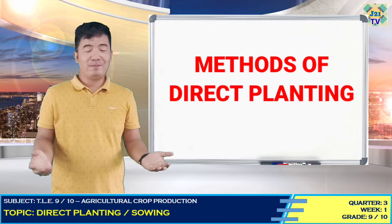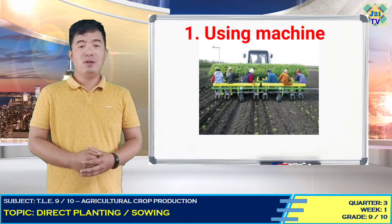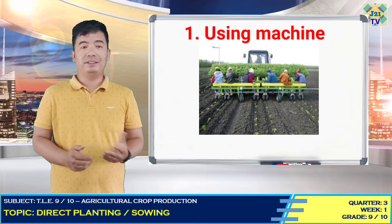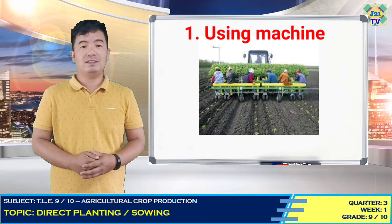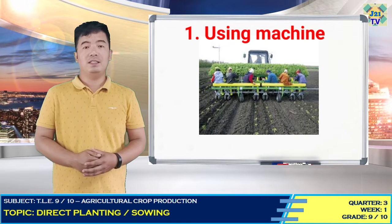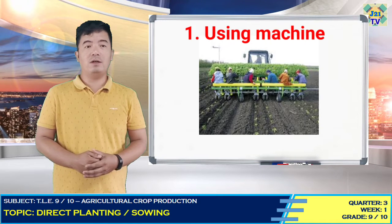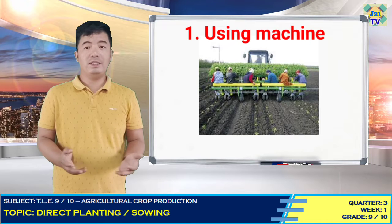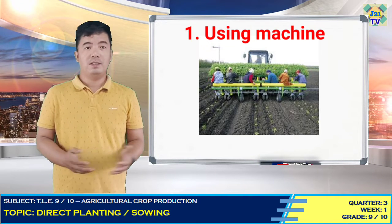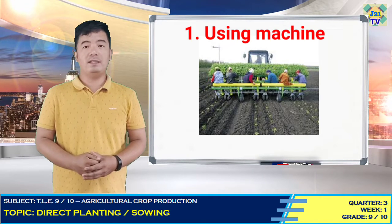Methods of direct planting. First is by using machine. Most commercial gardeners plant seeds with machine planters, drillers, and the like. Machines do the work much better and more rapidly than by hand. The common seed driller opens the furrow, drops the seeds, covers them, and packs the soil all in one operation. These drillers can be regulated to sow at various rates and at the depth desired.